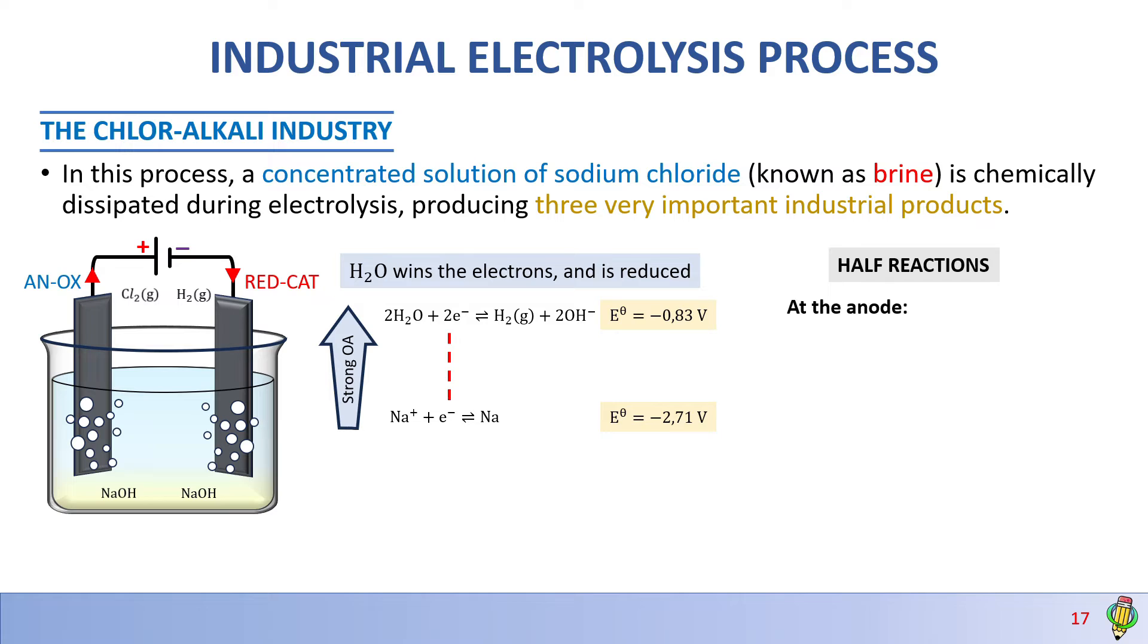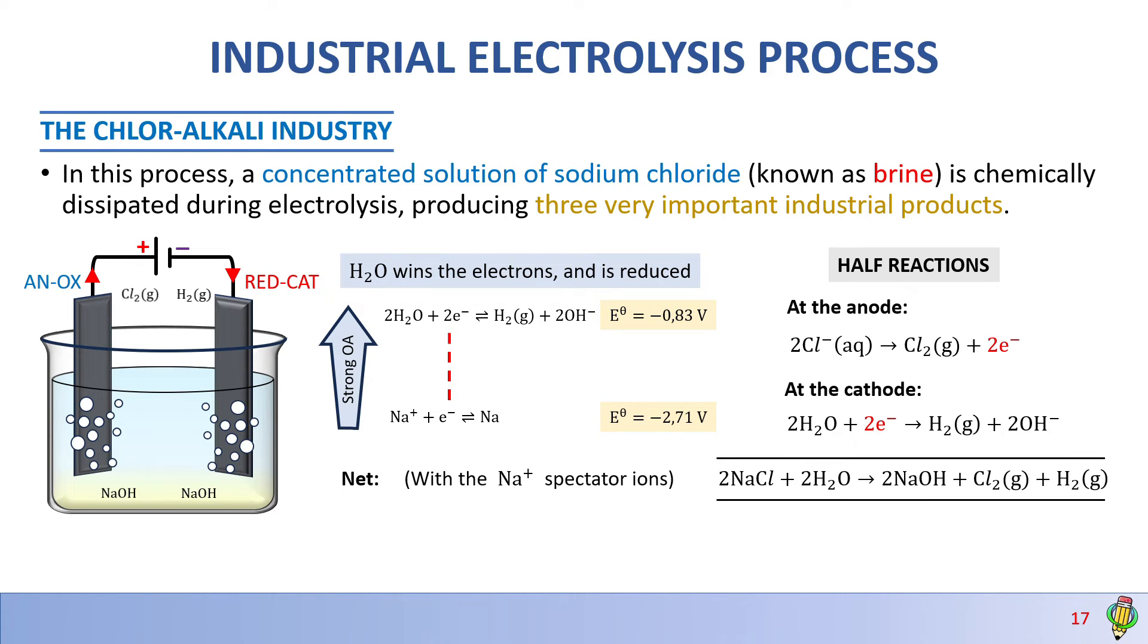Now we look at the half reactions. At the anode, two chloride ions are oxidized to form Cl₂ gas and lose two electrons. At the cathode, water is reduced to form H₂ gas plus two hydroxide ions. The net ionic reaction, including Na+ spectator ions, is: 2NaCl + 2H₂O → 2NaOH + Cl₂ + H₂.